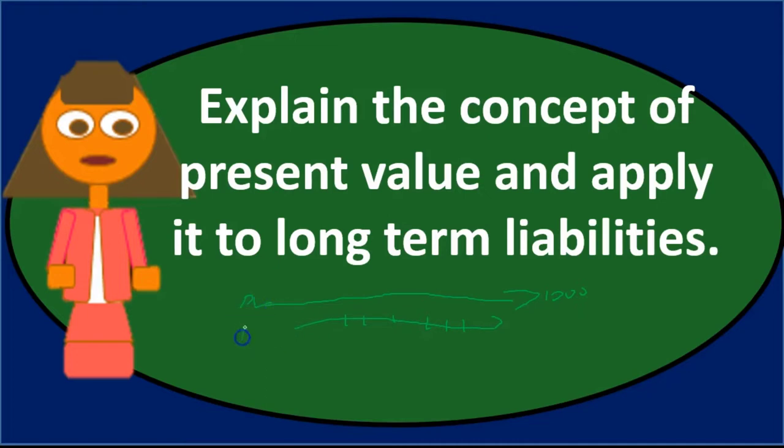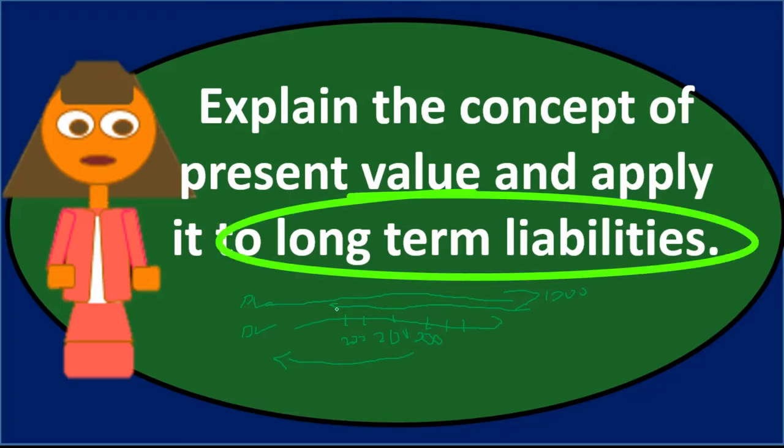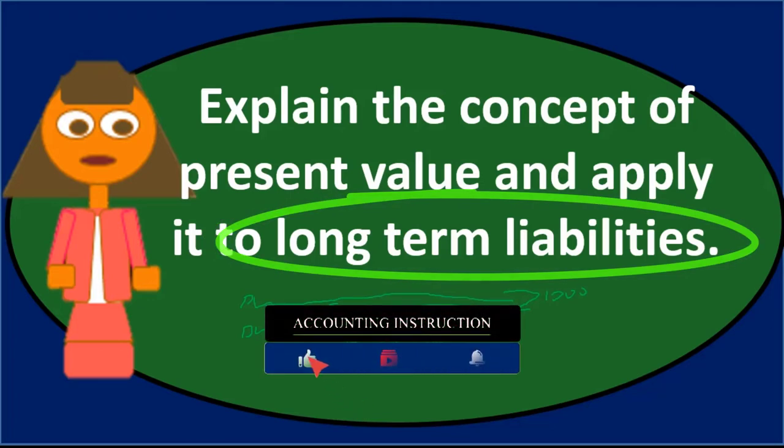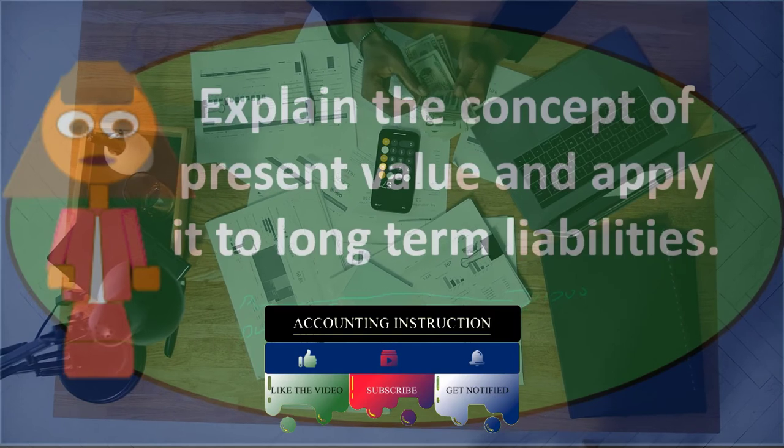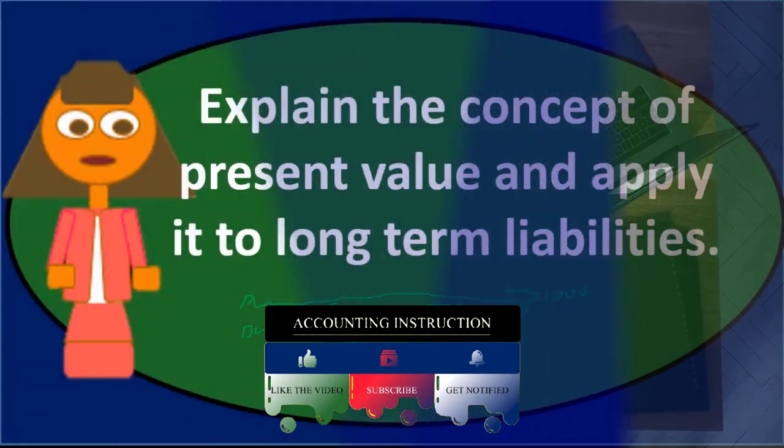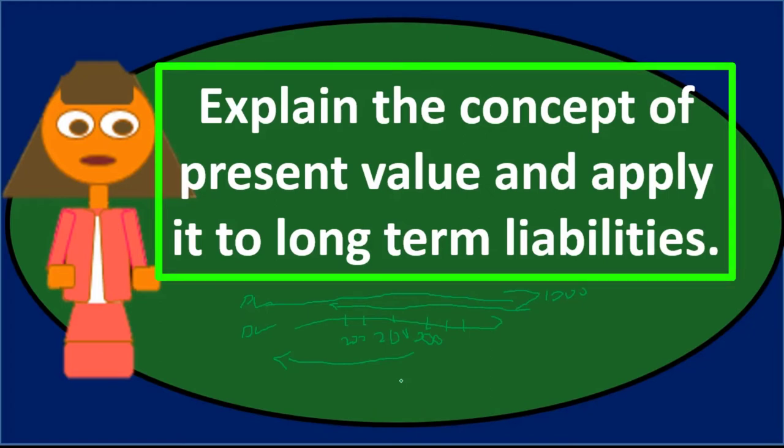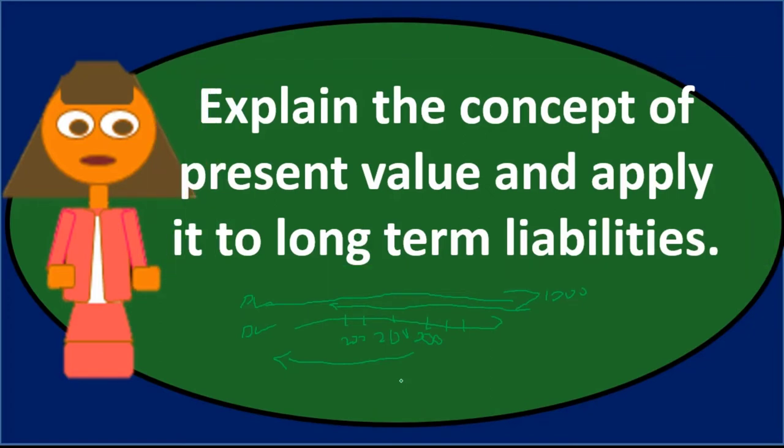At time zero, we'd have to present value these items. If we're paying, say, $200 every six months, we'd present value that annuity and bring it back to the current day. Present value the lump sum payment and bring it back to the current day. That would be the price of the bond. A note would be the same way—a long-term liability note could have installment payments with interest and principal, or it could be set up similar to a bond.